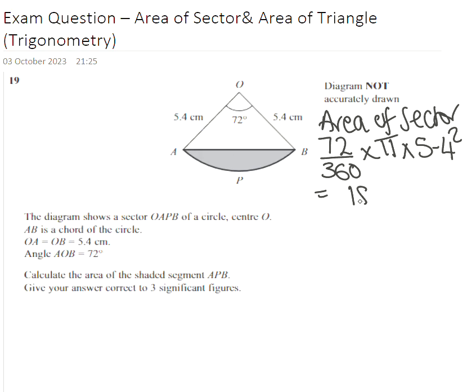I'm going to write 18.3218. So that is what we have for the sector. Now we need to find, that's the first stage, and the second stage is to find the area of this triangle.